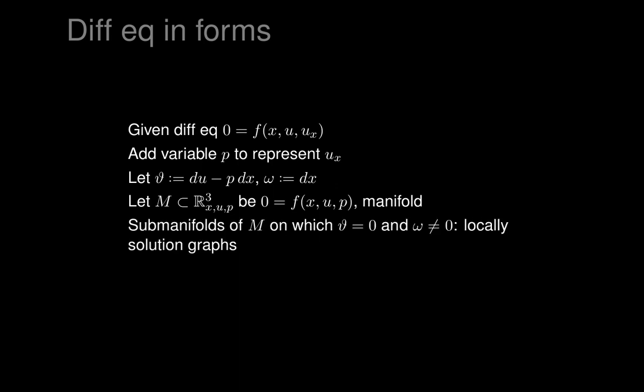We look at the submanifolds of M on which theta vanishes and on which omega doesn't vanish. Because omega is dx and doesn't vanish, x can be written as a coordinate on the submanifold. Because theta vanishes, p is the derivative of u with respect to x on that submanifold. So the submanifolds of M on which theta is zero and omega is not zero are locally the graphs of solutions of the differential equation.